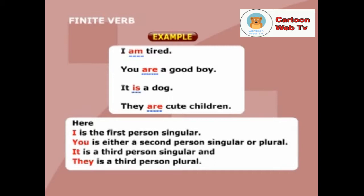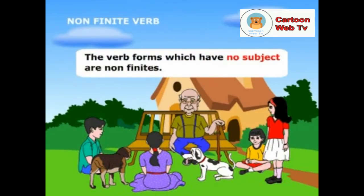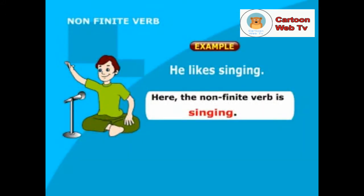Here, 'I' is the first person singular. 'You' is either second person singular or plural. 'It' is a third person singular and 'they' is a third person plural. The verb forms which have no subject are non-finites. Example: he likes singing. Here, the non-finite verb is 'singing'.